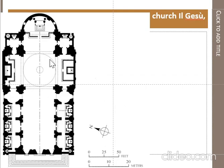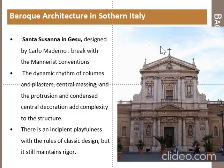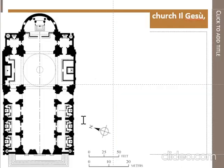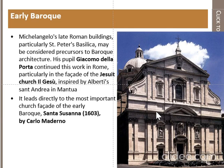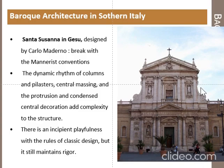This is the plan of the Church of the Gesu, in which you can see the columns and the piers used, representing the piers and columns of St. Peter Basilica. The facade of Santa Susana resembles the facade of this Jesuit church. It has a scroll invented in the High Renaissance period. This Baroque style is generally a conversion from early Renaissance to high, late, and then Baroque, in which decoration, curvilinear forms, and complex geometries were added. The dramatic rhythm of columns, pilasters, central massing, and condensed central decoration add complexity to the structure.